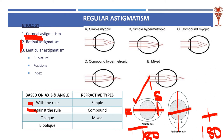There are also important types to know. Simple myopic astigmatism means one image in front of the retina and one image on the retina. Compound myopic astigmatism means both images are in front of the retina. Simple hyperopic astigmatism means one image on the retina and one image behind the retina. Compound hyperopic astigmatism means both images are behind the retina. Mixed astigmatism means one image is in front and one image is behind the retina.